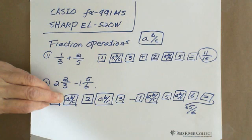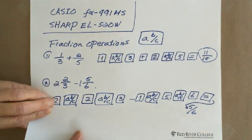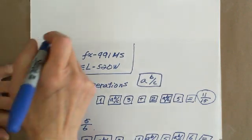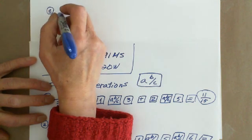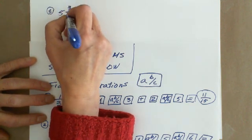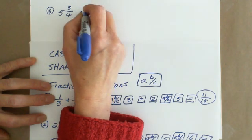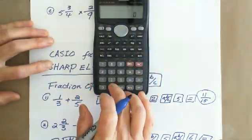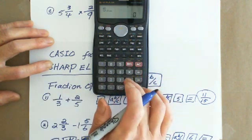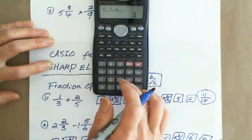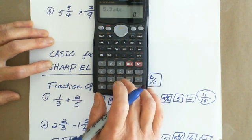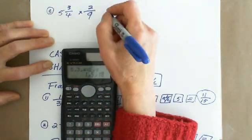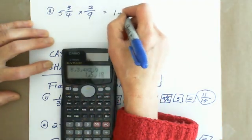For multiplication and division, it's similar. For example, 5 and 3 quarters multiplied by 2 over 9. You do 5 ABC 3 ABC 4, which is 5 and 3 quarters, multiply 2 ABC 9, equals 1 and 5 over 18.